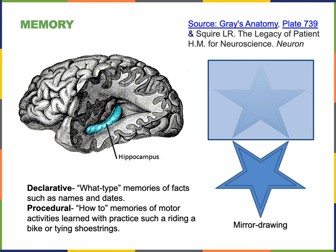One of these tasks is the mirror drawing task, where the patient is asked to draw by tracing within two concentric shapes, such as two concentric stars, as shown in the illustration. If you were just to look at your hand while tracing, this task would be very easy and trivial. Instead, the patient has to look at a mirror rather than at their hand, so they are only able to see the reflection of the paper and their hand drawing. This mirror drawing task is difficult at first, but with practice you can learn this procedural skill.